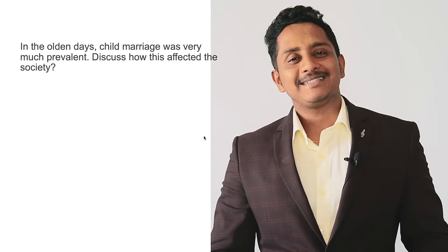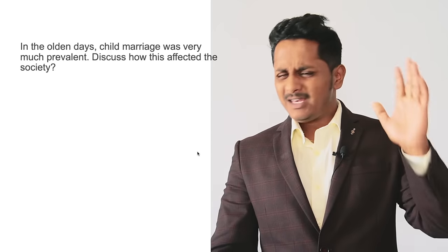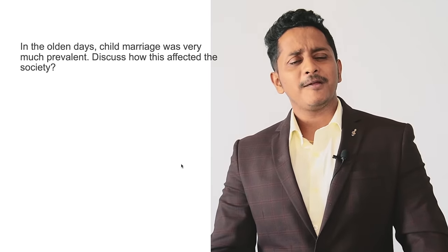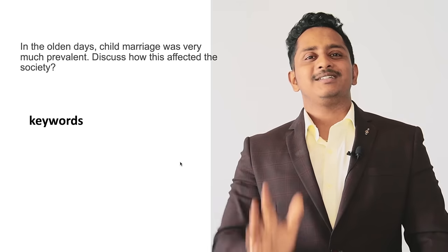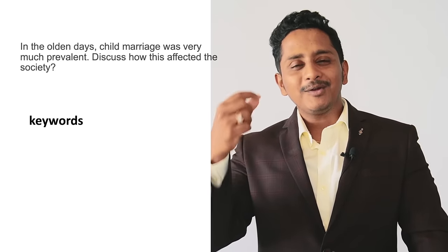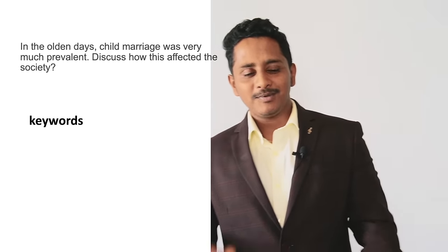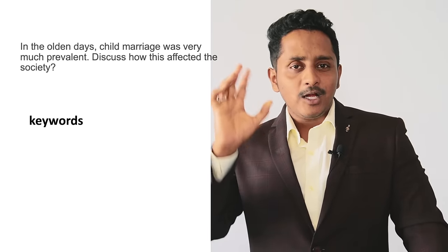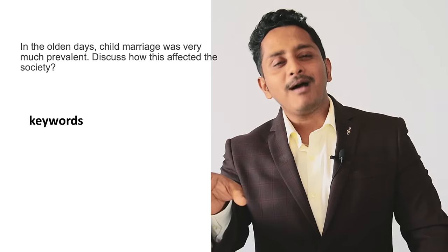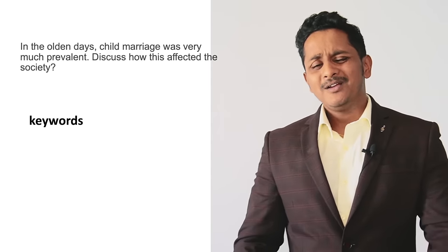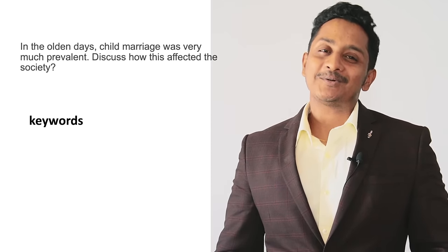So this is a question: 'In olden days, child marriage was very much prevalent. Discuss how this affected the society.' Any question — content is not a priority, do not worry. The first thing we talk about is the keywords and idea generation. People have trouble getting ideas. Once they have an idea, it's very simple to write. How do we generate ideas? Don't go into specifics. There is nothing like a good idea gets you 90 marks and a bad idea gets you 10 marks — good or bad ideas give you the same marks.